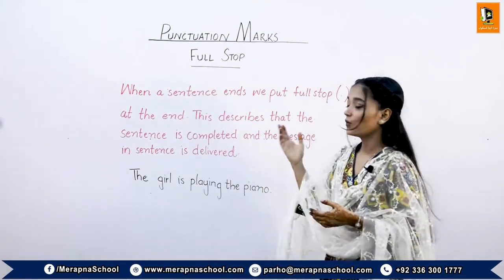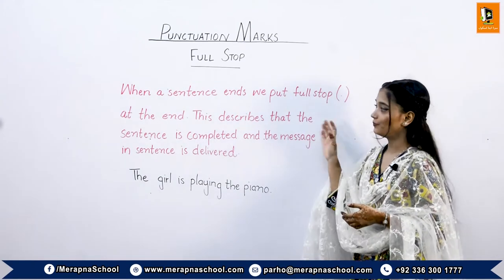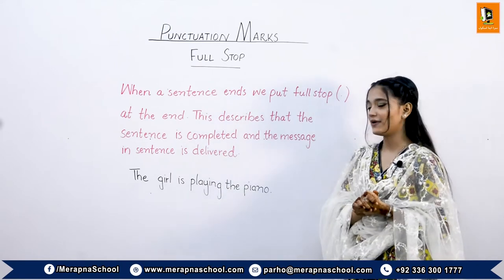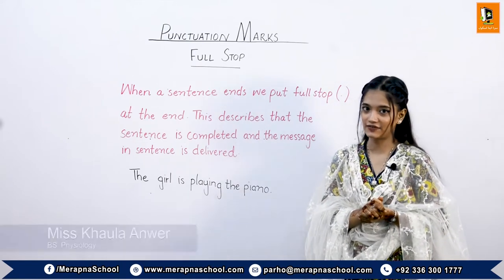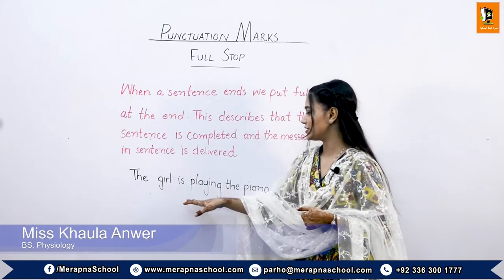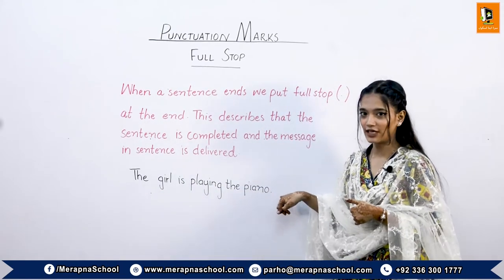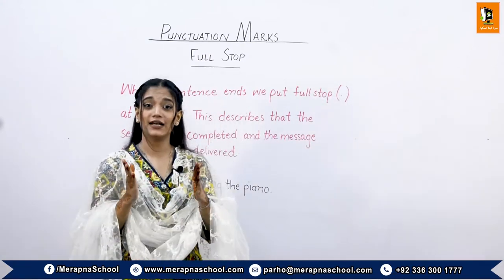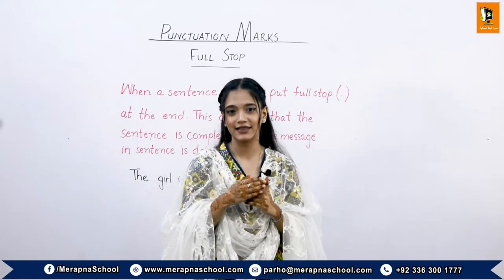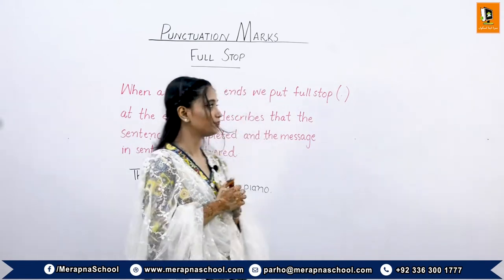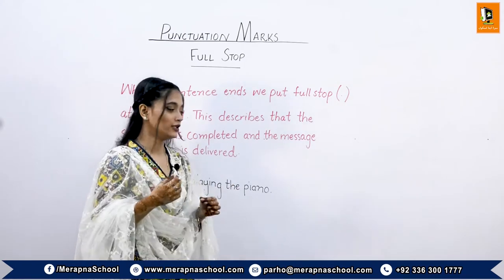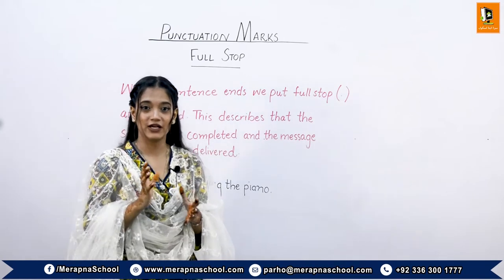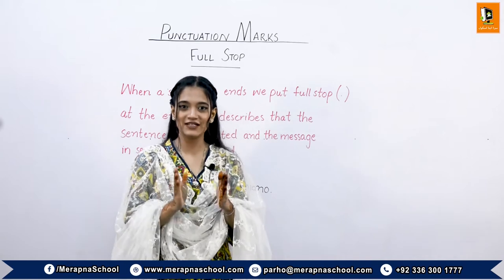When a sentence ends we put a full stop at the end. This shows that the sentence is completed and the message in the sentence is delivered. For example, in the sentence 'The girl is playing the piano,' at the end we have put the full stop, which describes that the message is delivered and the sentence is completed. The full stop is drawn like a dot.